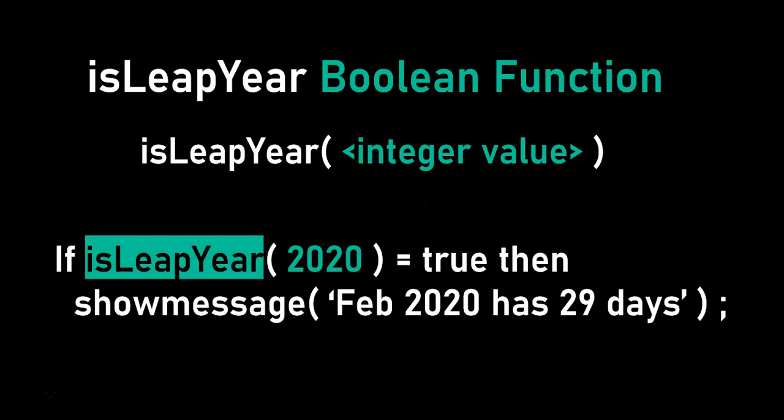For example, you could use an if statement: if isLeapYear(2020) is true, then you know that February of 2020 has 29 days. And if it wasn't, then you could say it has 28 days, because that's one of the key differences about a leap year — the number of days in February.